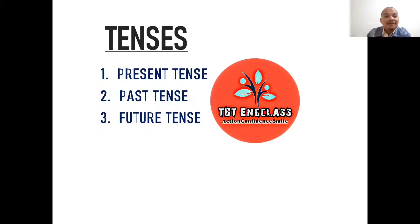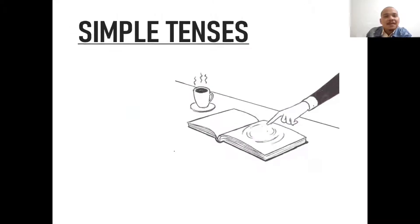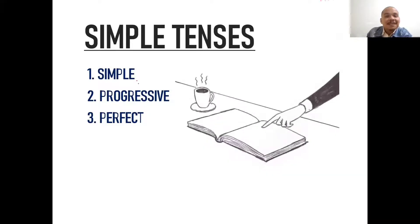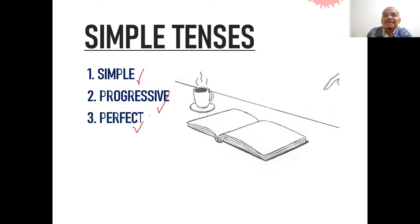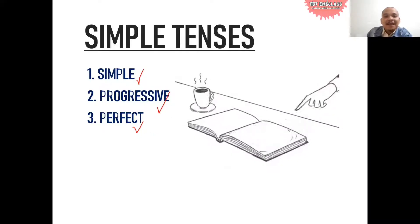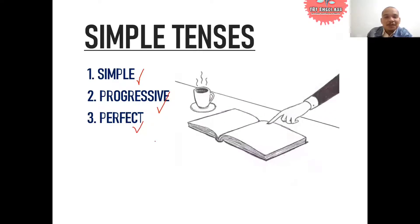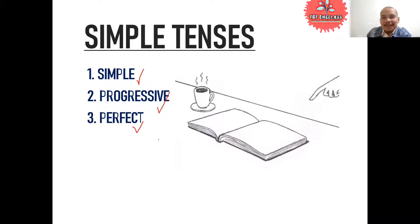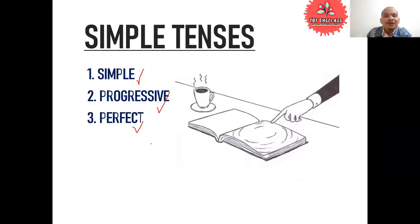There are three main types of tenses: we have present, we have past tense, and we have future. But today in this video I just want to let you see the simple tense. You are going to focus on simple tense, progressive tense, and perfect tense. So spend a few minutes to watch fully with me.